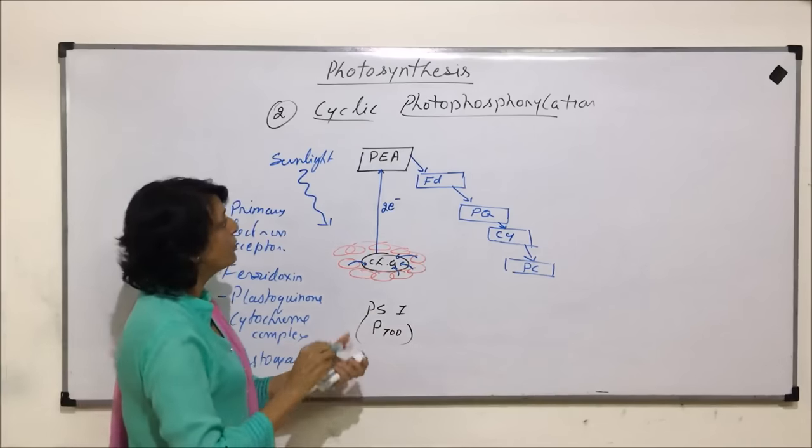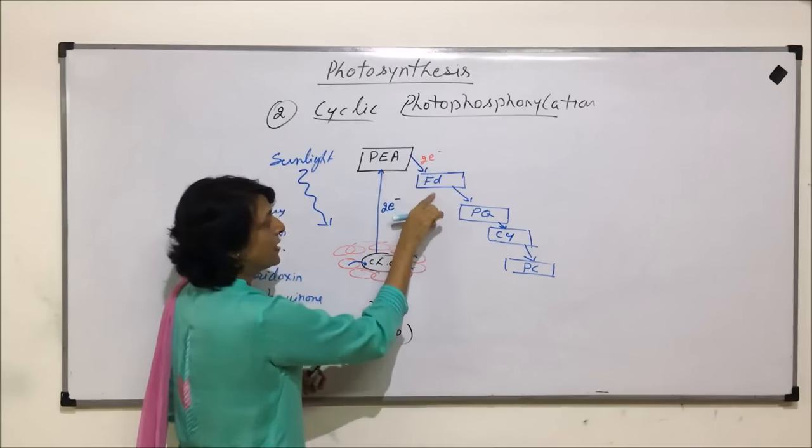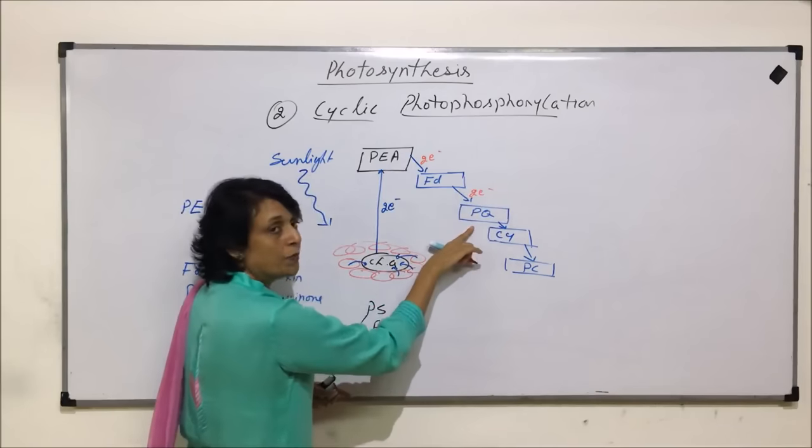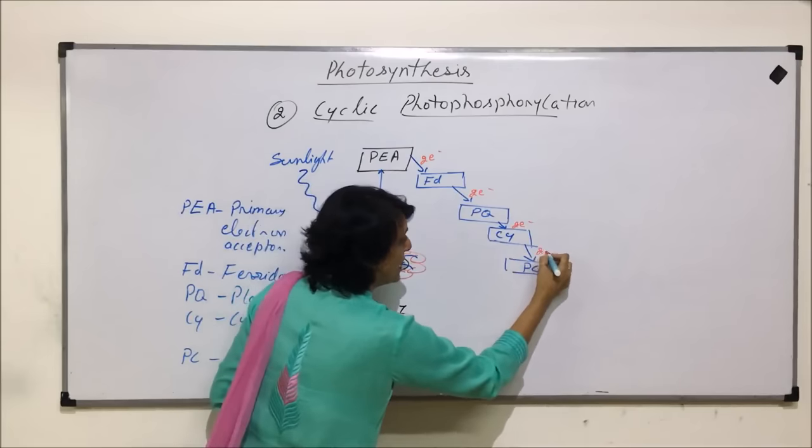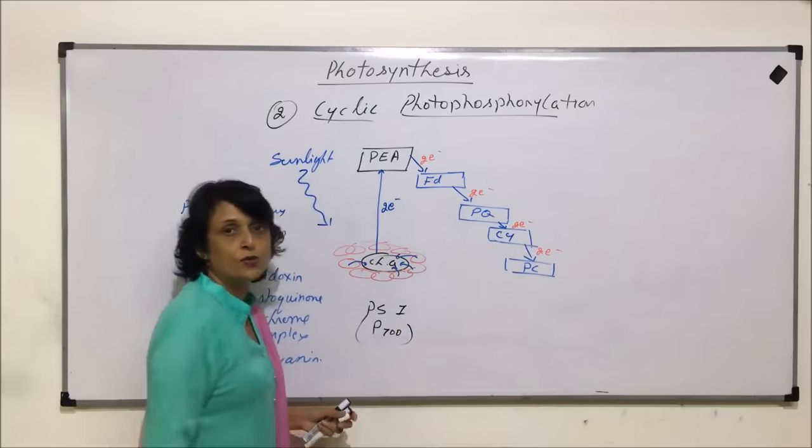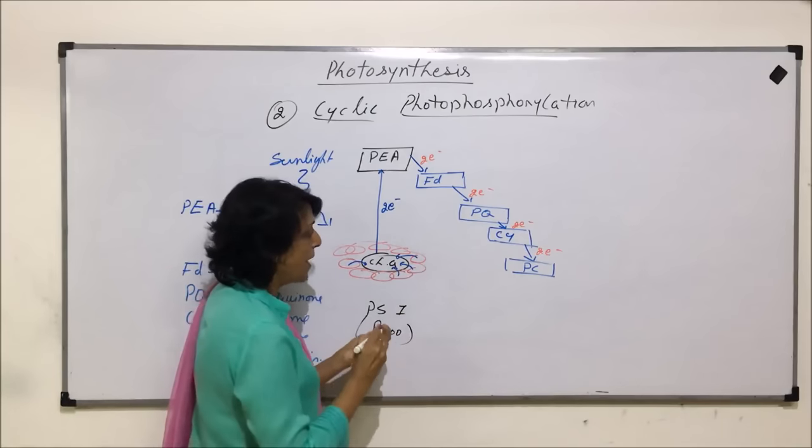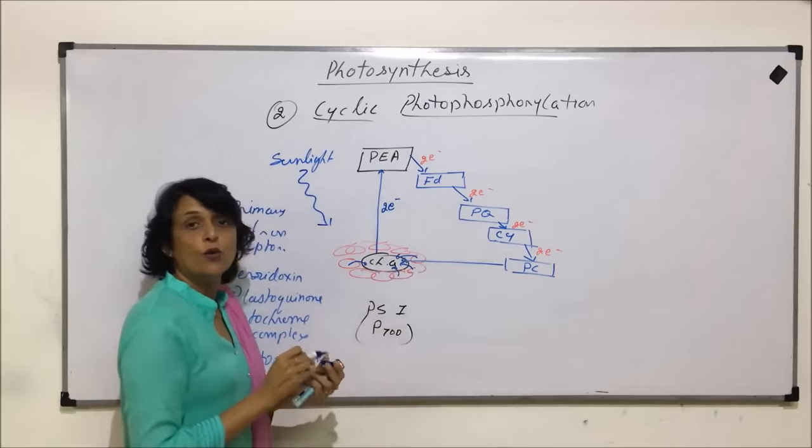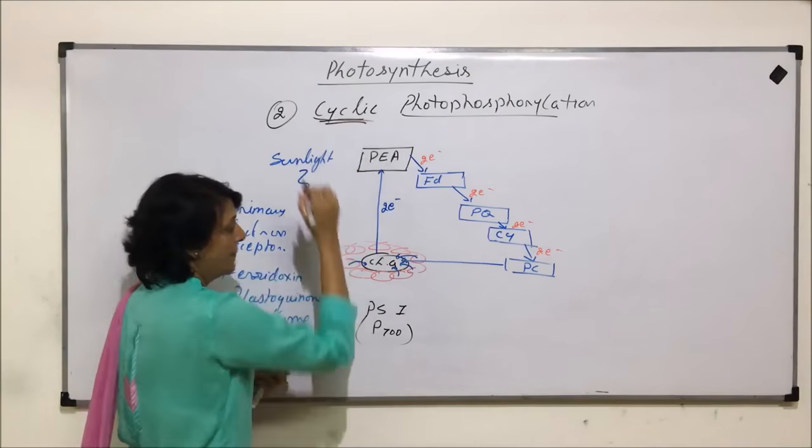That means now, the electron is passing from primary electron acceptor to ferredoxin, then from ferredoxin to plastoquinone, from plastoquinone to cytochrome, and from cytochrome to plastocyanin. And from plastocyanin, this pair of electrons comes back to chlorophyll A, and that is why we are using the term cyclic. So, this pair of electrons is now back to chlorophyll A molecule.